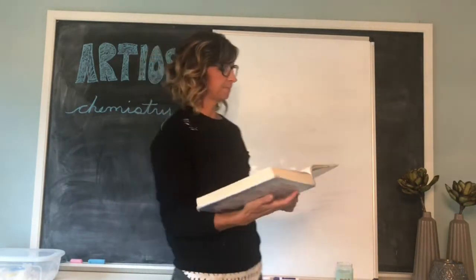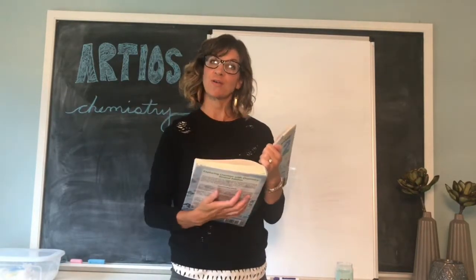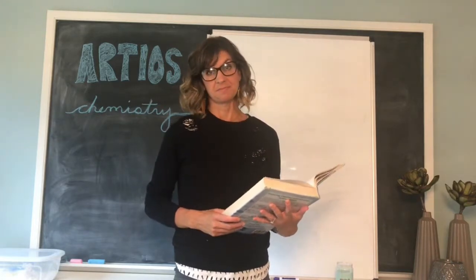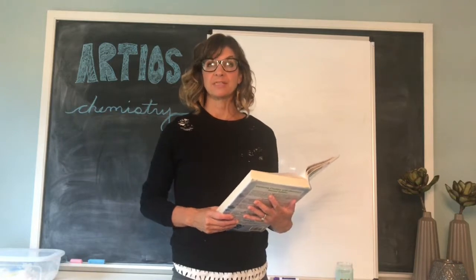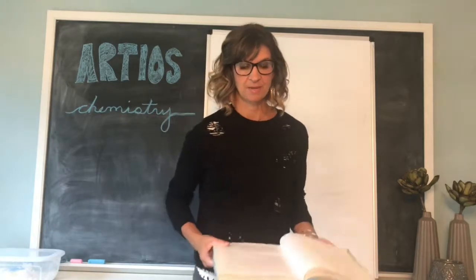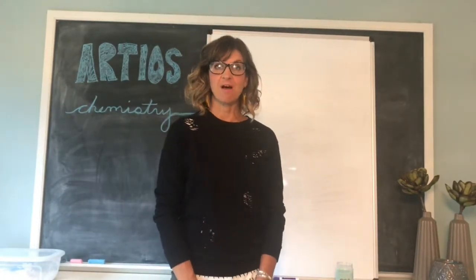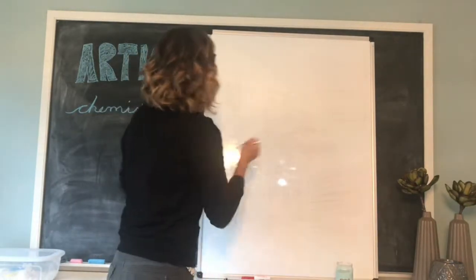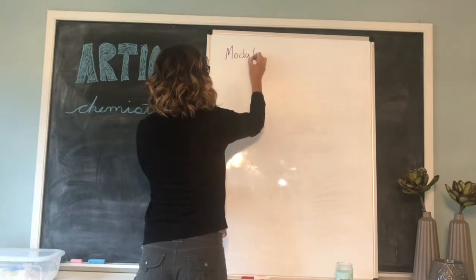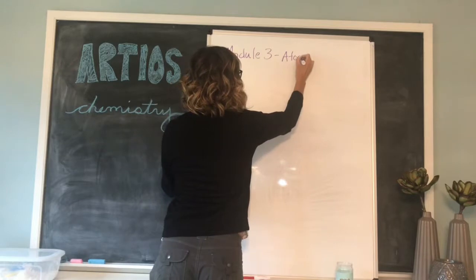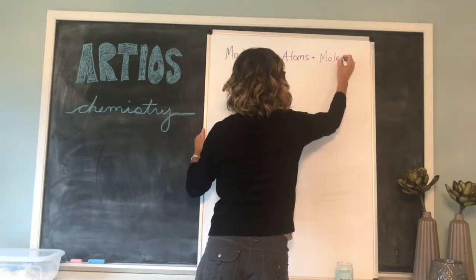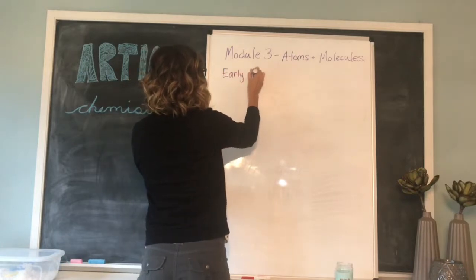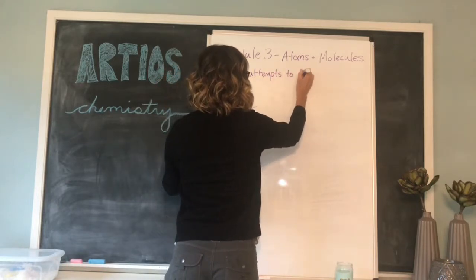It starts on page 69, so make sure that you have your textbook open and that you are following along. We're going to start talking about atoms and molecules. Chemists like to study matter because chemistry is the study of matter. So when early chemists and early scientists were trying to understand matter, they came up with a couple of different theories. The first theory was the continuous theory of matter. Let's take some notes. Module three: atoms and molecules. And the first section is on early attempts to understand matter.